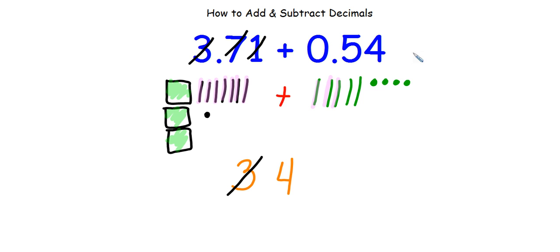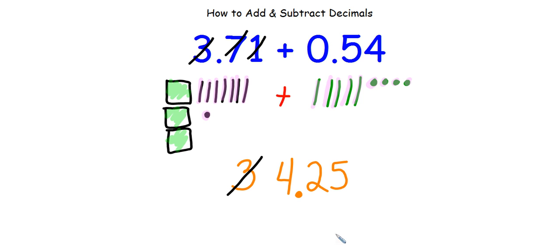I still have two tens remaining, so I put those dots here — I have 2 tenths leftover. Now I put all my hundredths together: 1, 2, 3, 4, 5 of them. That number goes after the 2. So the answer is 3 and 71 hundredths plus 54 hundredths equals 4 and 25 hundredths.